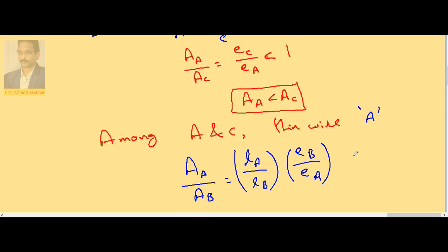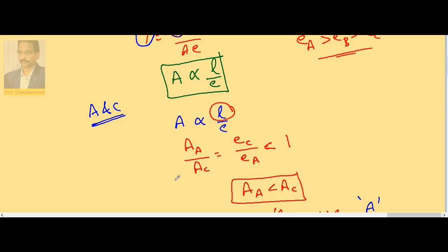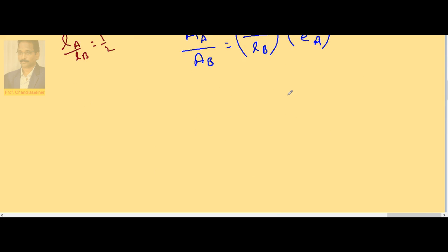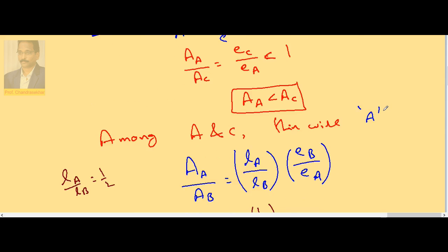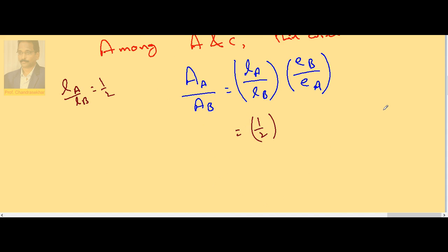Now LA by LB, 1 is to 2 because ratio is given, so this is 1 by 2 times EA is greater than EB. This is EB by EA.